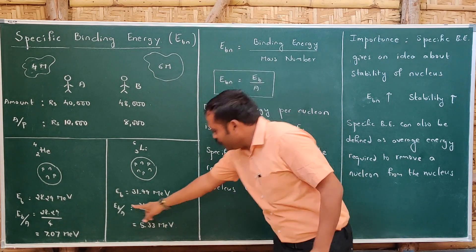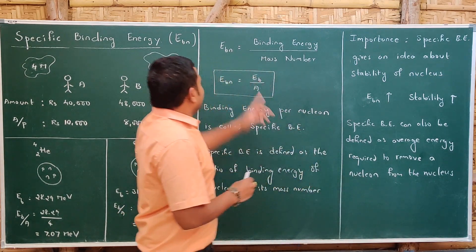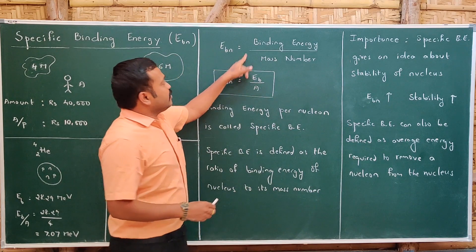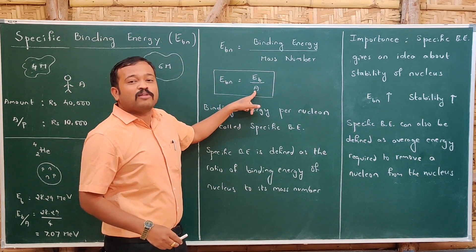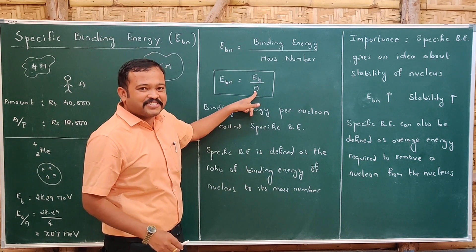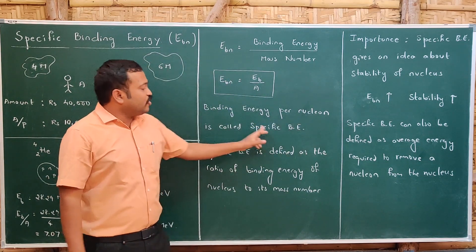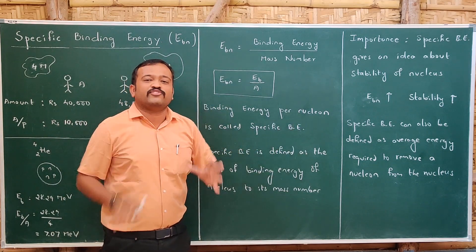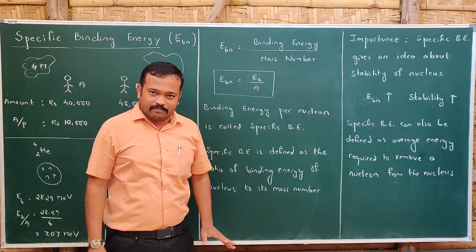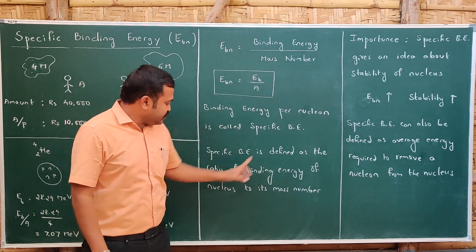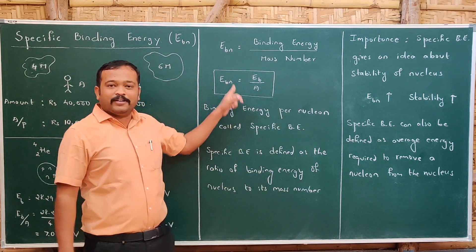So how do we calculate this? It is the ratio of binding energy to the mass number. Binding energy per nucleon = EB divided by A, where A is the total number of nucleons represented by the mass number. Binding energy per nucleon is called specific binding energy — I will be using either of these two terms interchangeably. Specific binding energy is defined as the ratio of binding energy to its mass number.